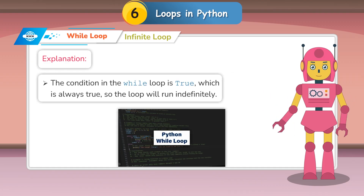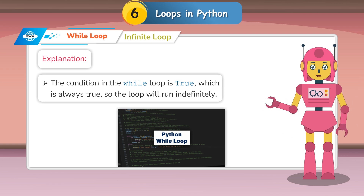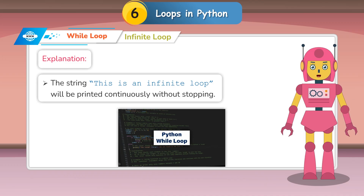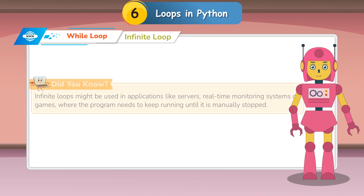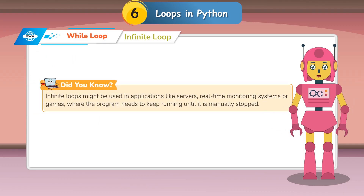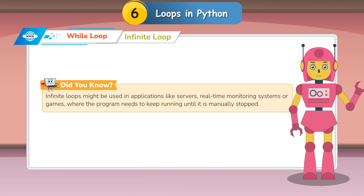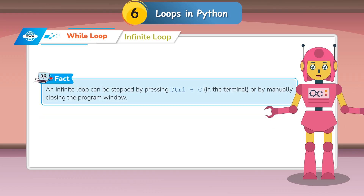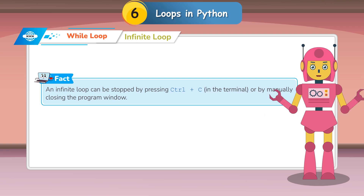The condition in the while loop is True, which is always true, so the loop will run indefinitely. The string 'this is an infinite loop' will be printed continuously without stopping. Infinite loops might be used in applications like servers, real-time monitoring systems, or games where the program needs to keep running until manually stopped. An infinite loop can be stopped by pressing Ctrl+C in the terminal or by manually closing the program window.